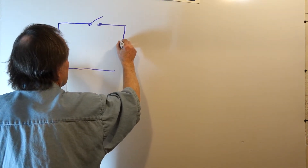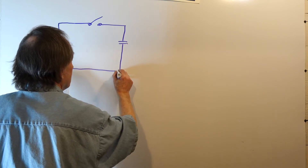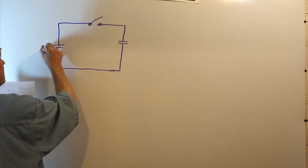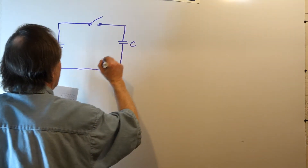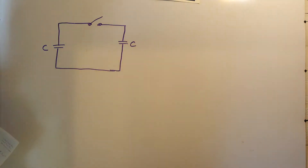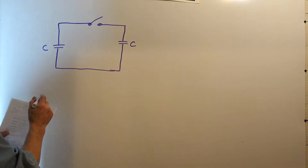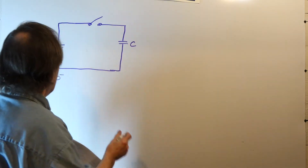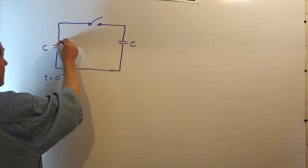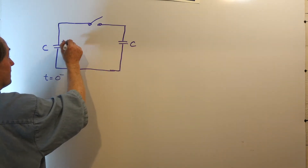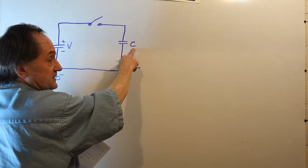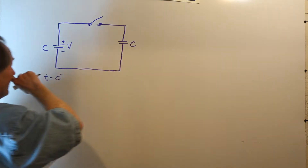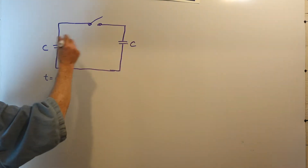We're connecting the two capacitors through a switch, and they both have value C. Initially, at T equals zero minus, the switch is open. We charge the capacitor on the left to voltage V, and the capacitor on the right is initially discharged, so there's no voltage across it.